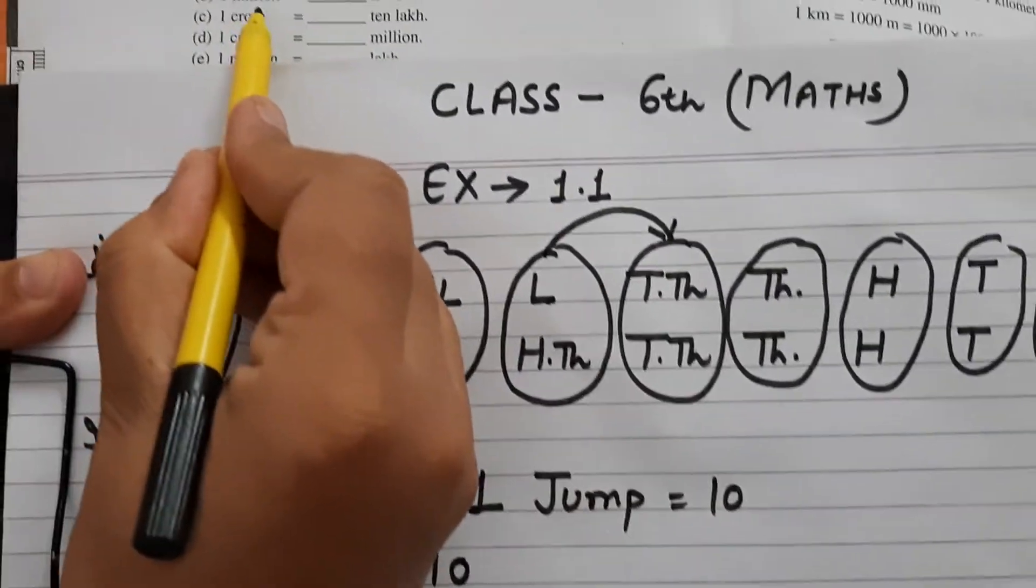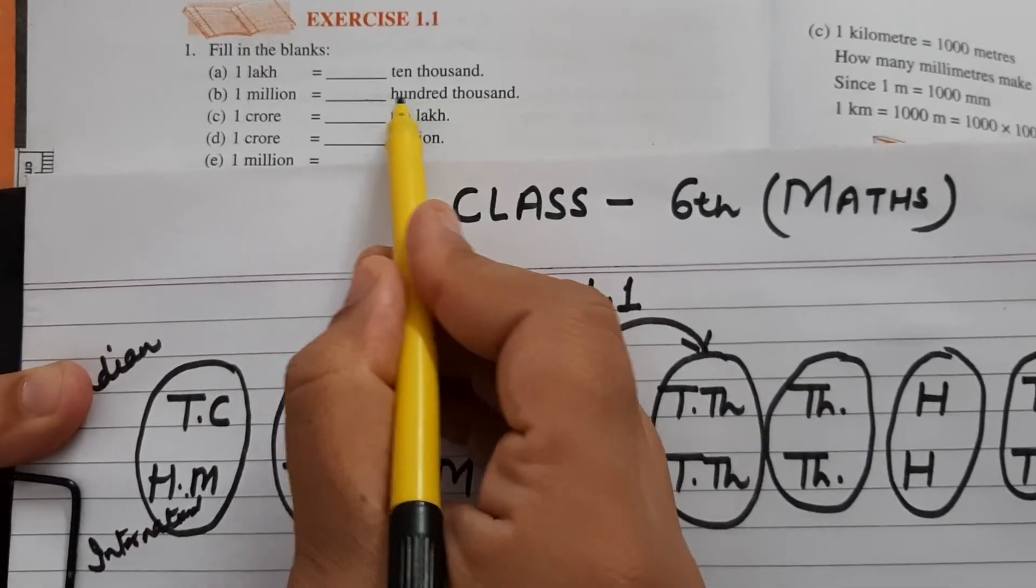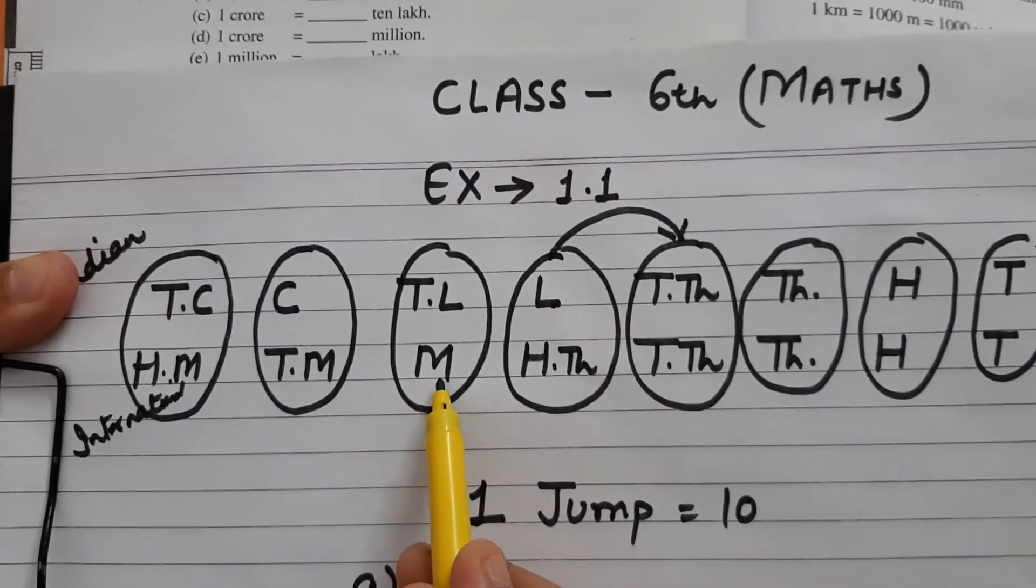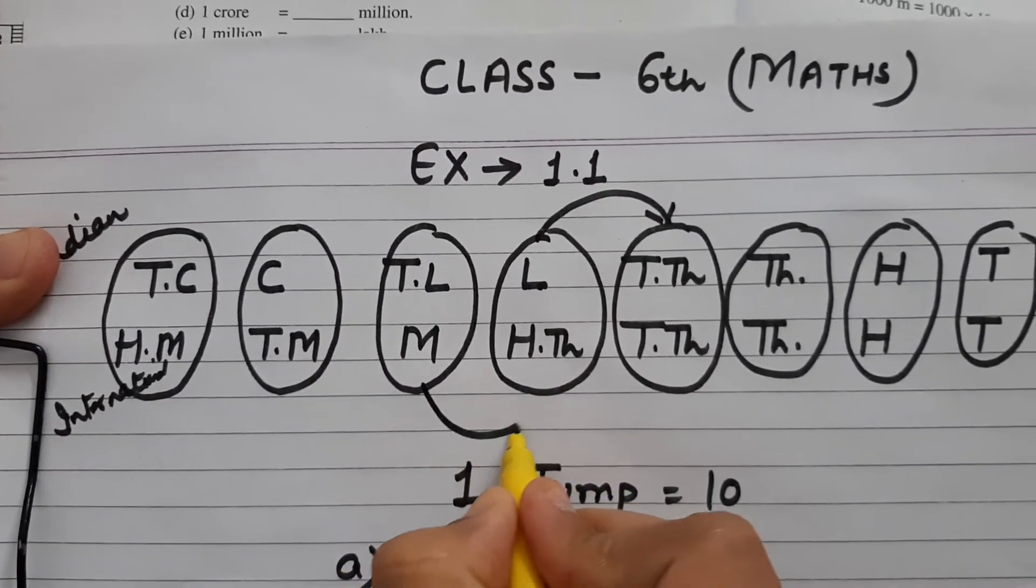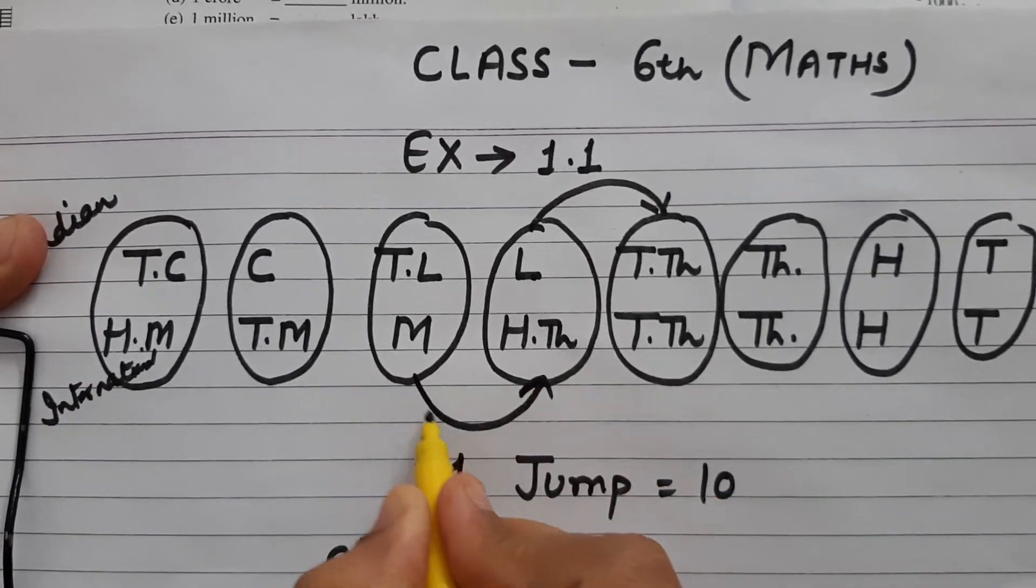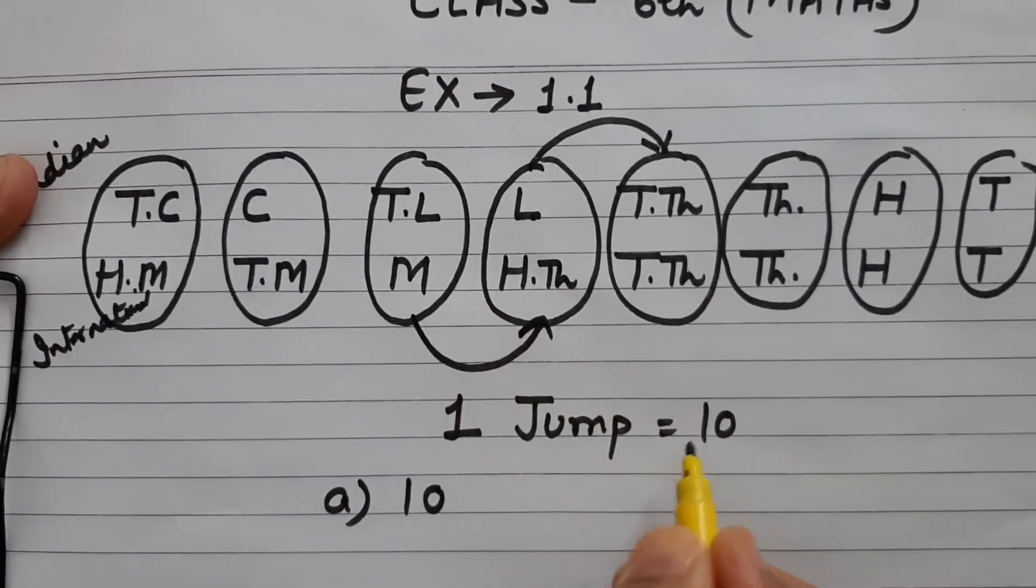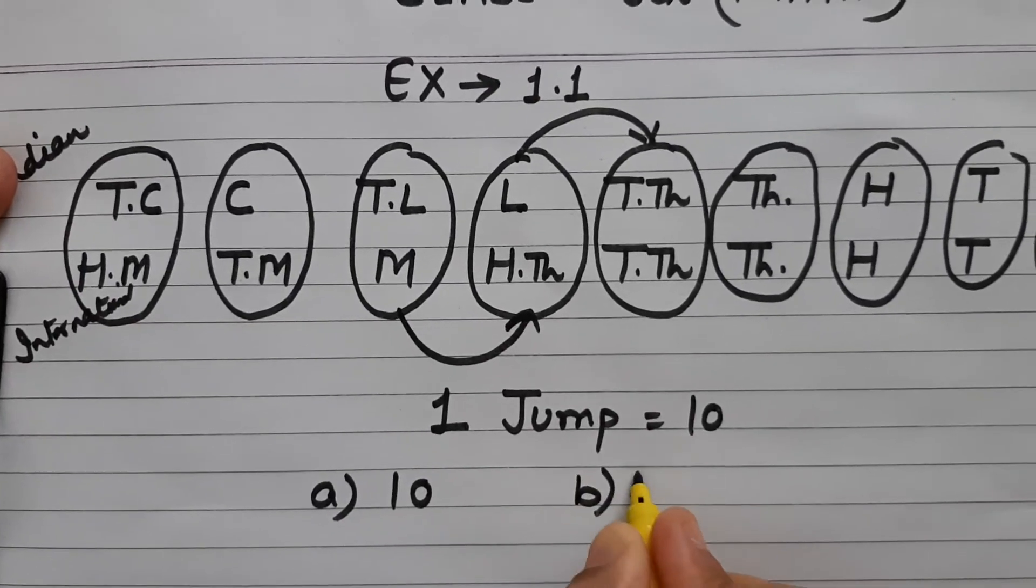Second है, one million equals to hundred thousand. कितने hundred thousand? million की तरफ आते हैं, और ये है hundred thousand. आप देख रहे हैं, million से hundred thousand में भी एक ही jump लगी. One jump equals to ten. तो b part का भी answer है ten.